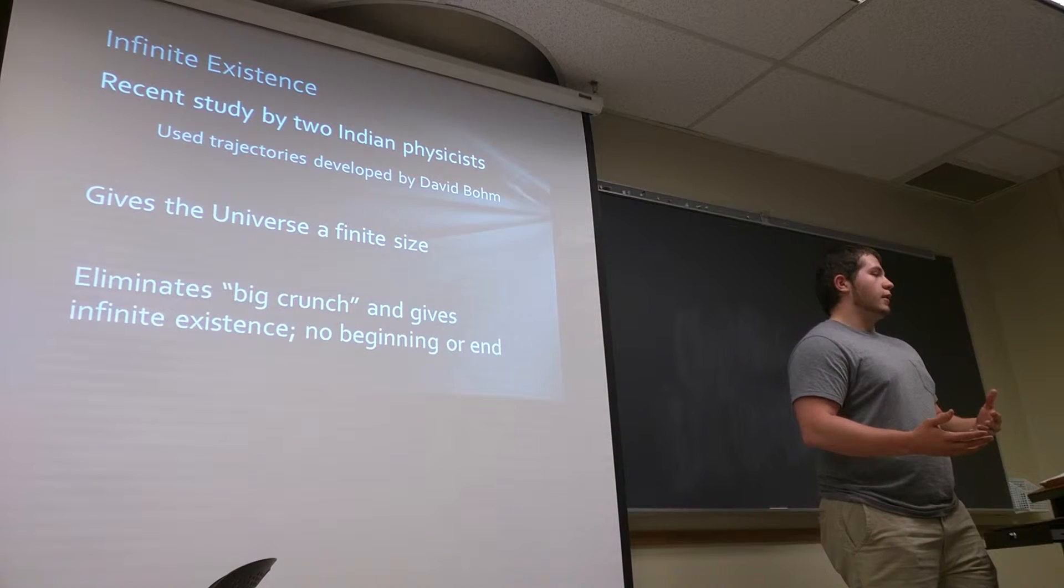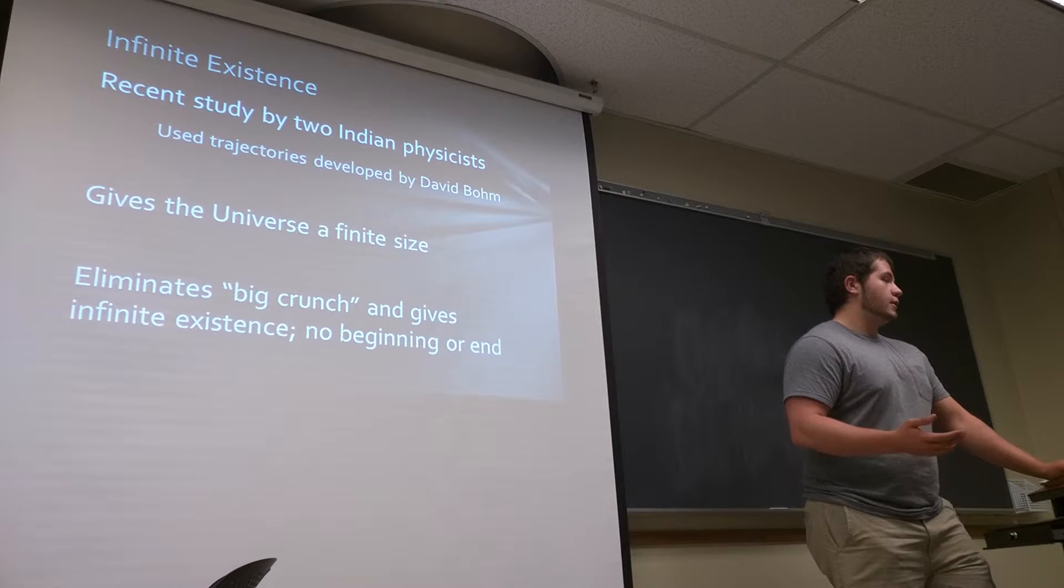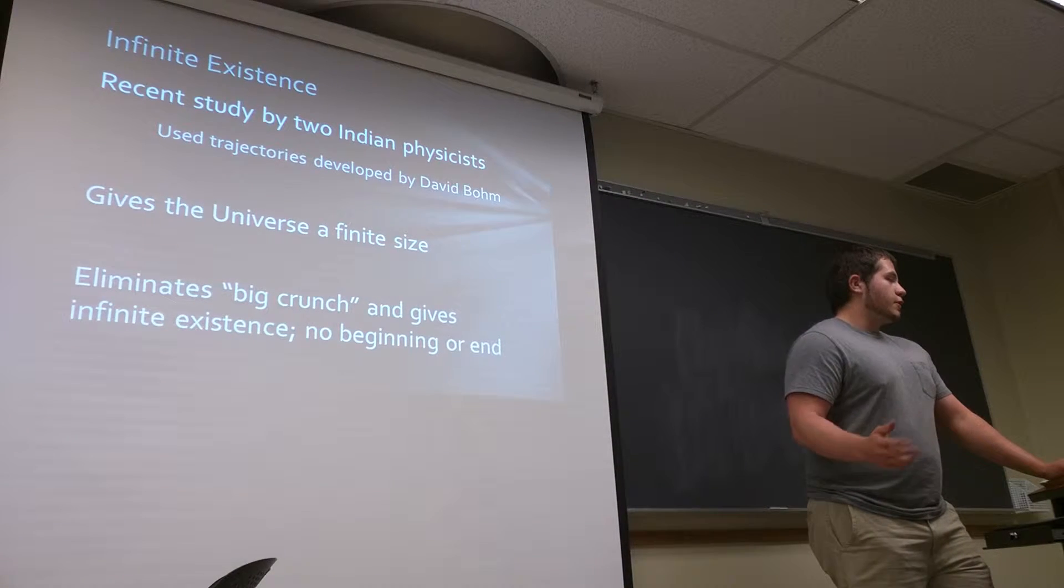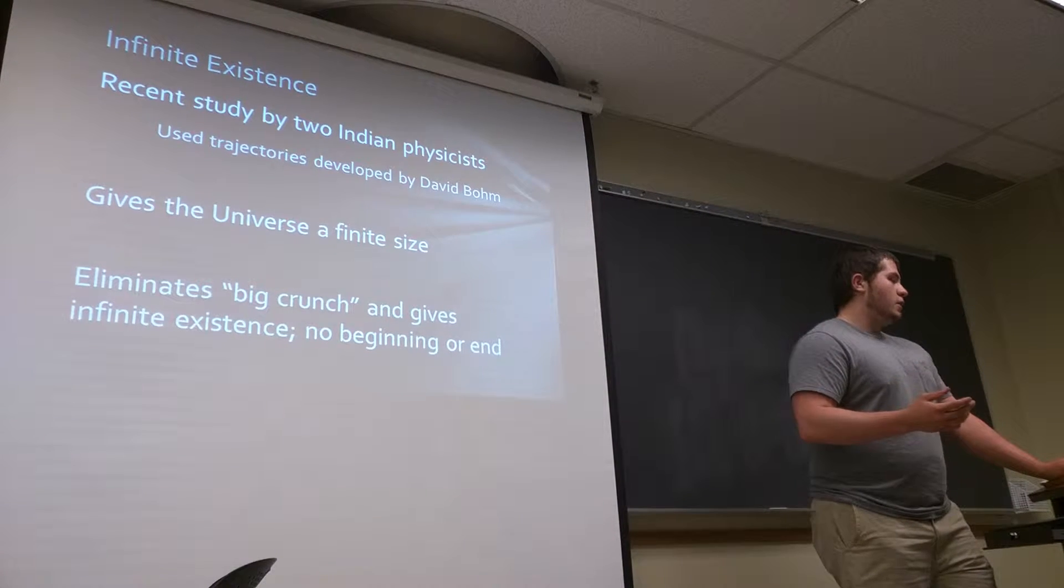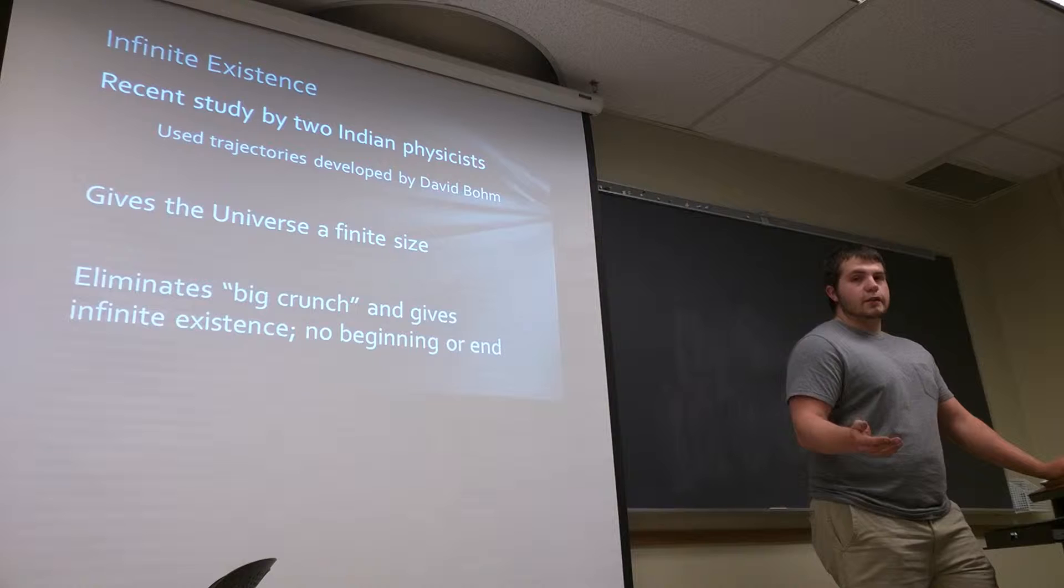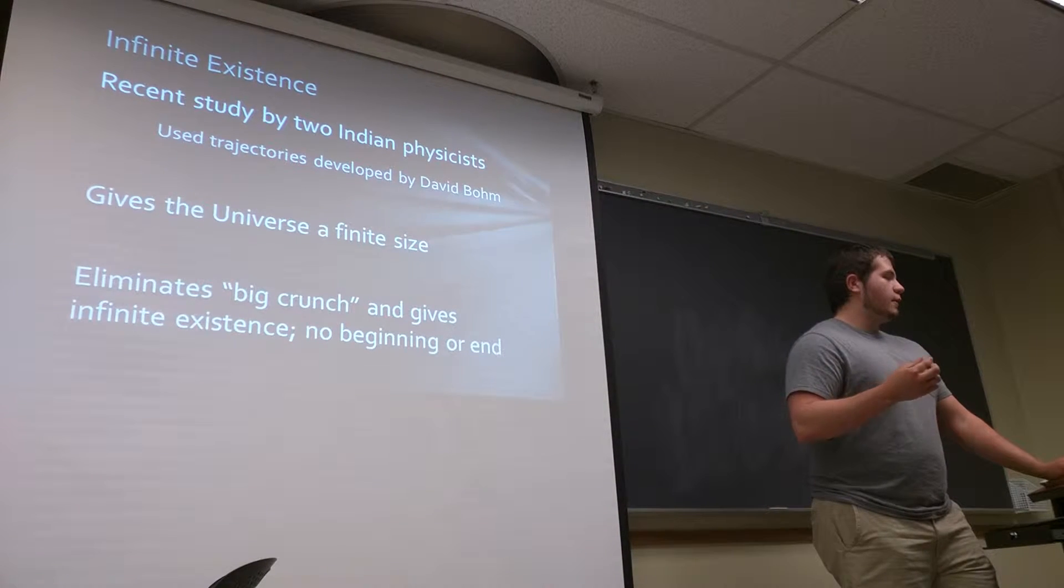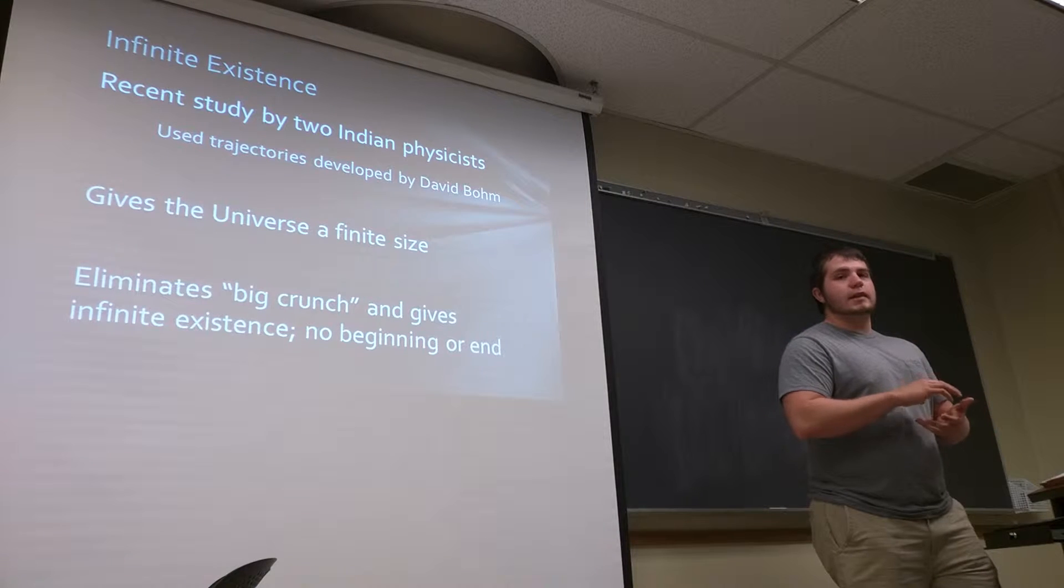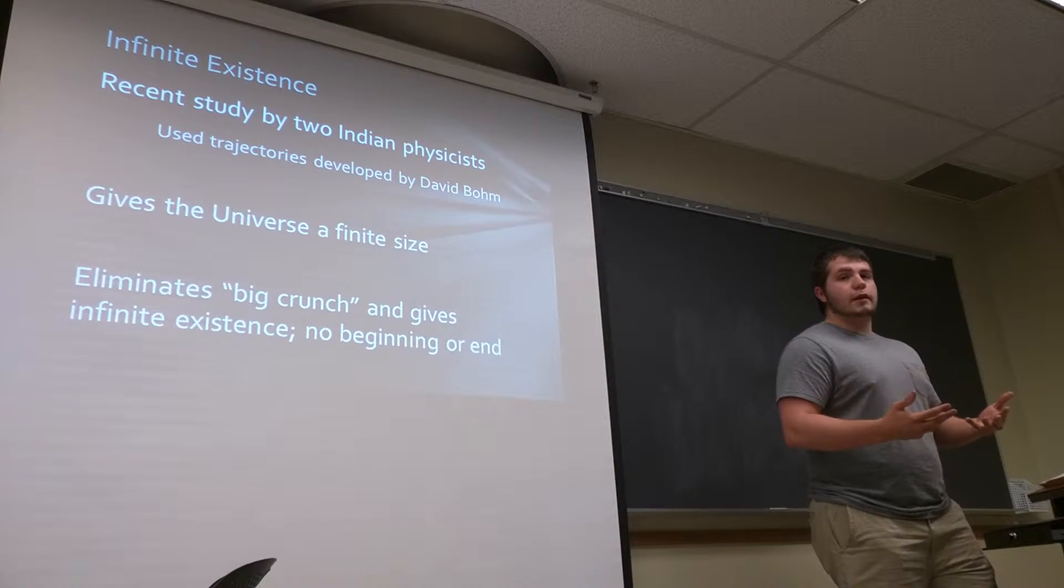And they did it through a theory called infinite existence. It was actually developed by a couple of Indian physicists, and they used trajectories that were developed by David Bohm. And what they did was they were able to apply these trajectories to Einstein's theory of relativity, and it altered it just enough that it gave the universe an actual finite size. So in this finite size, the laws of physics still applied and still worked.